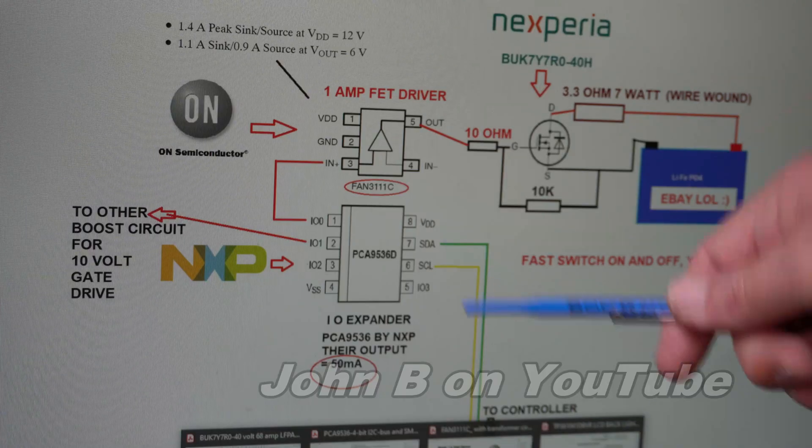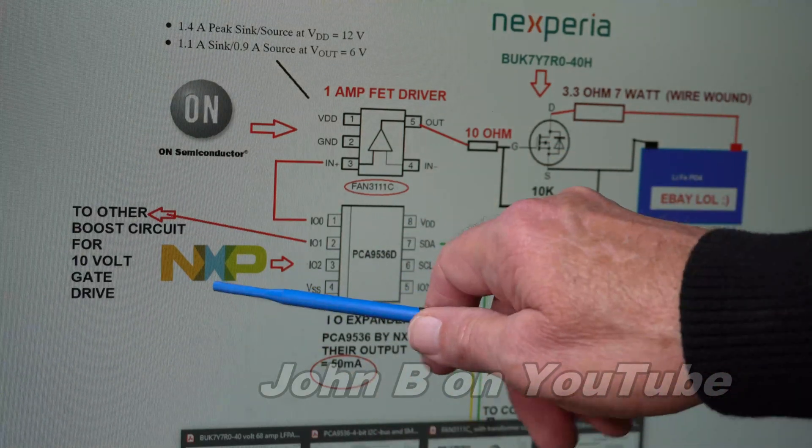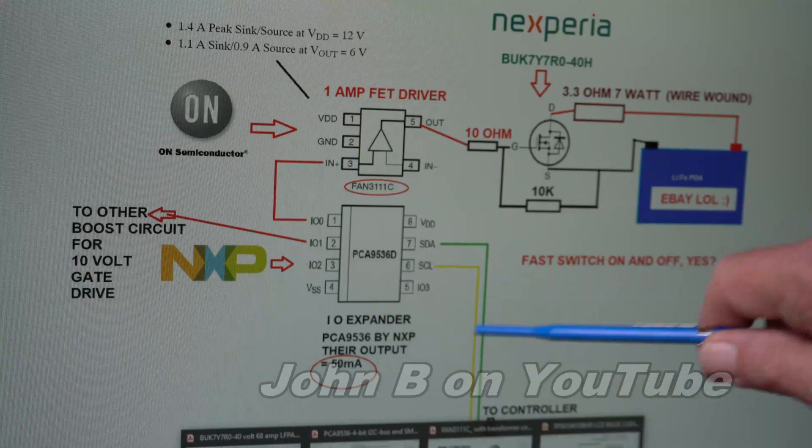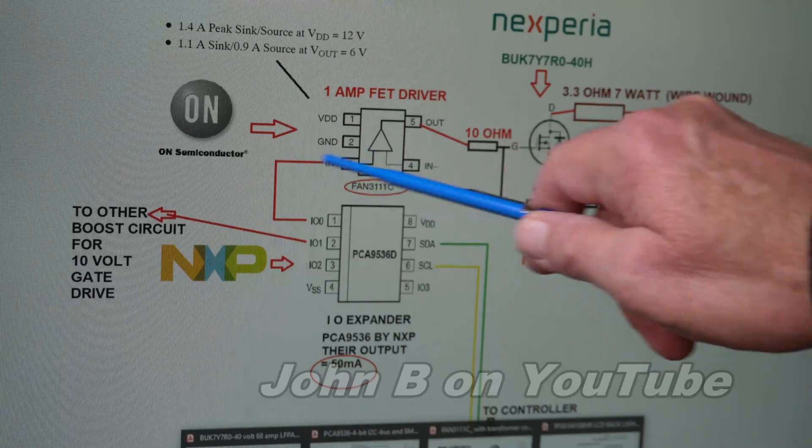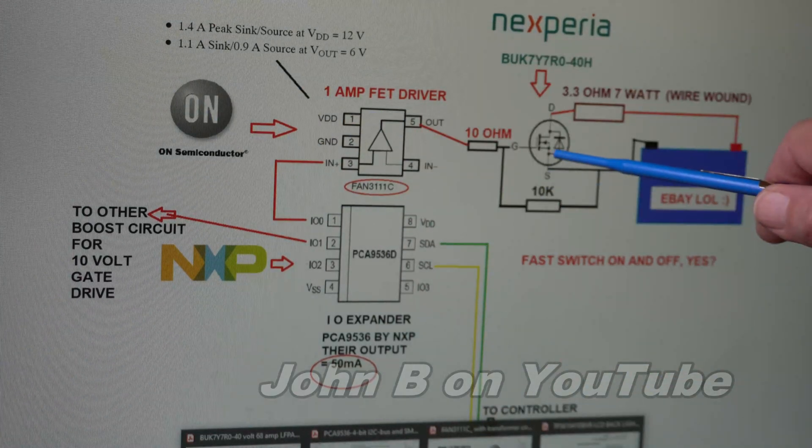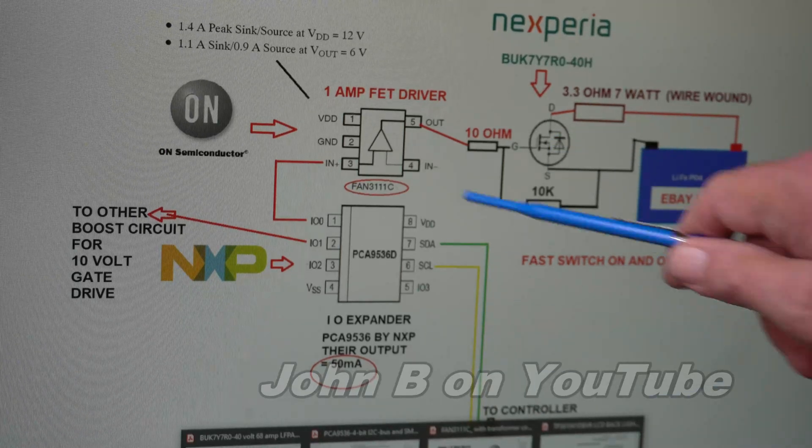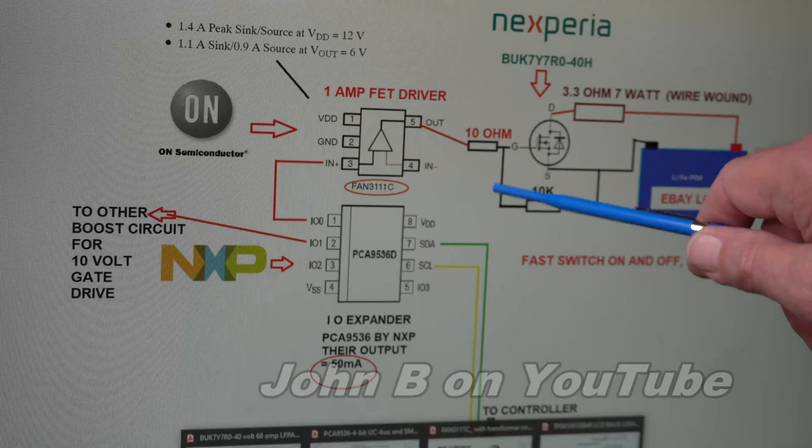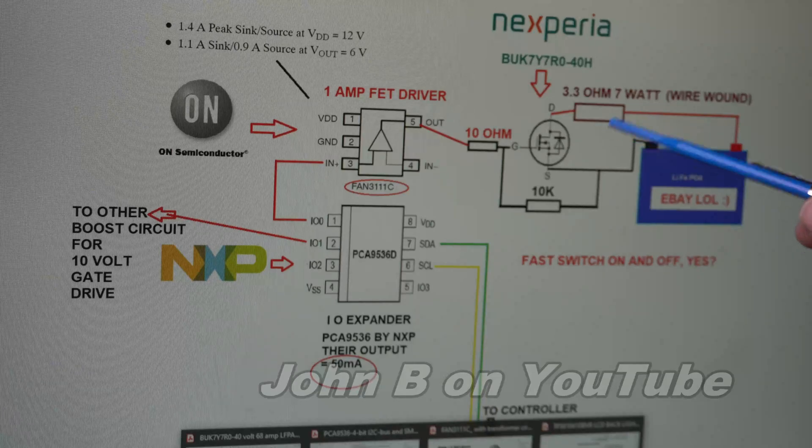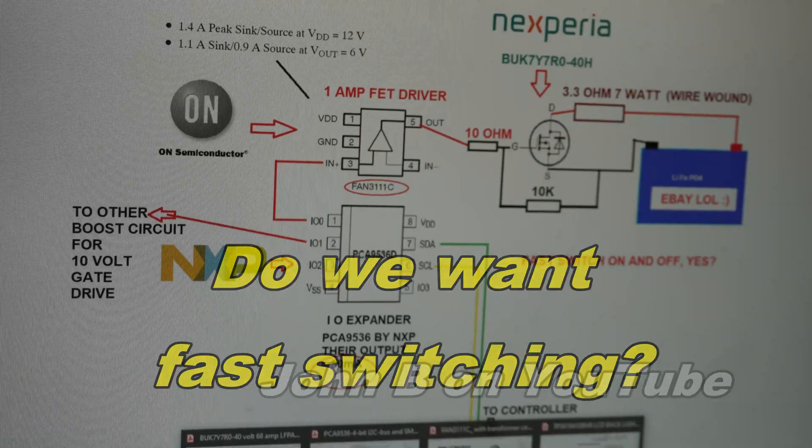So there's a quick look at the schematic. That's my port expander made by NXP—50 milliamp out, others are 25 or less. That runs to this FAN3111 by ON Semiconductor, that runs to my modern Nexperia FET transistor with a 10-ohm gate resistor, 10k to ground, and shorts at my eBay battery for a 3.3-ohm, 7-watt resistor. Fast switching on and off—yes, is that what you want? This is a discharge FET turning on and off.